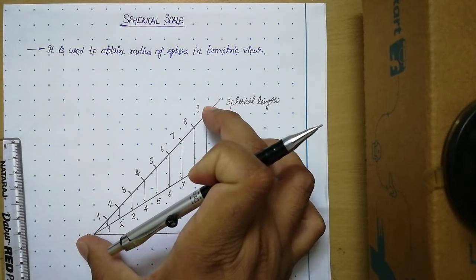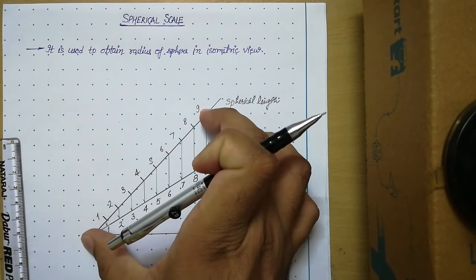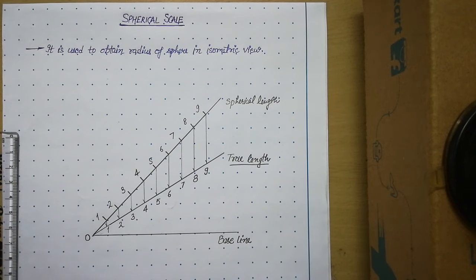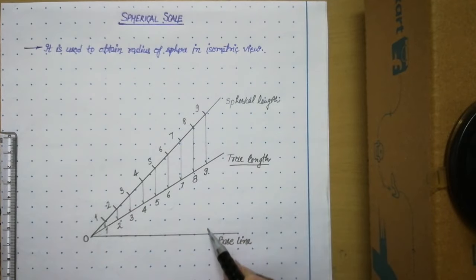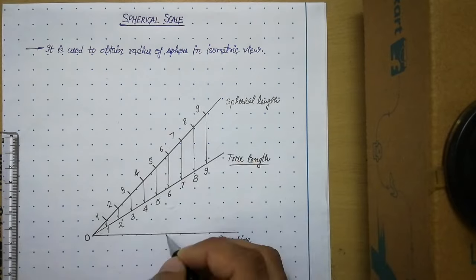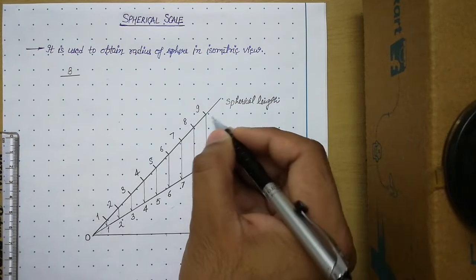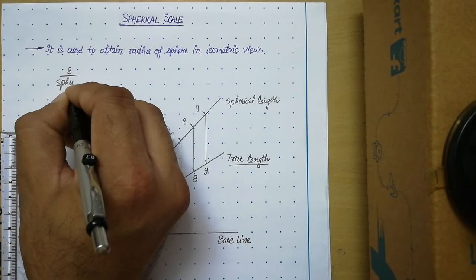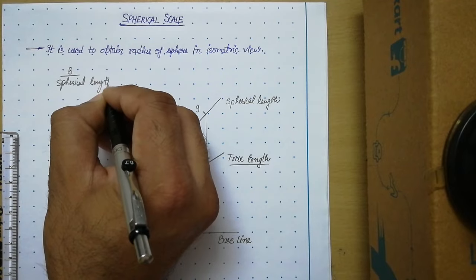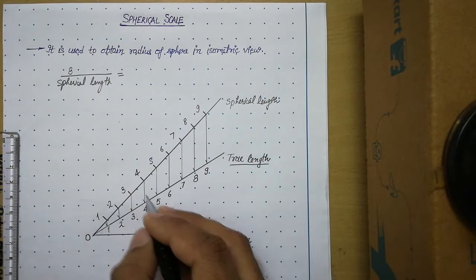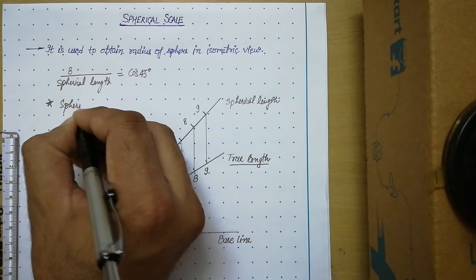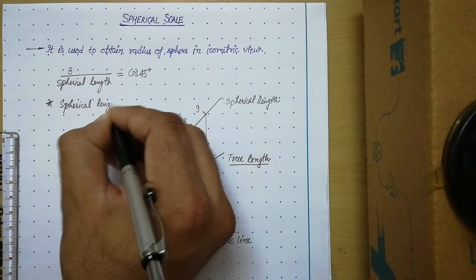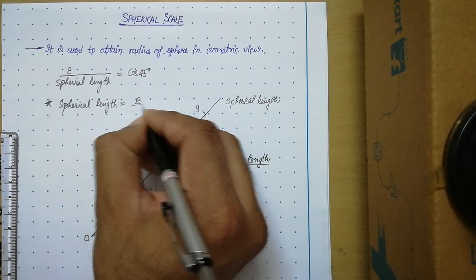The spherical length is 1.22 times the true length. We can also verify this mathematically, as we did for the isometric scale. To find the spherical length, consider the triangle formed. The base divided by the hypotenuse equals cosine of the angle. Since this lies on the 45 degree line, base divided by spherical length equals cos 45 degrees. Therefore, spherical length equals base divided by cos 45 degrees.